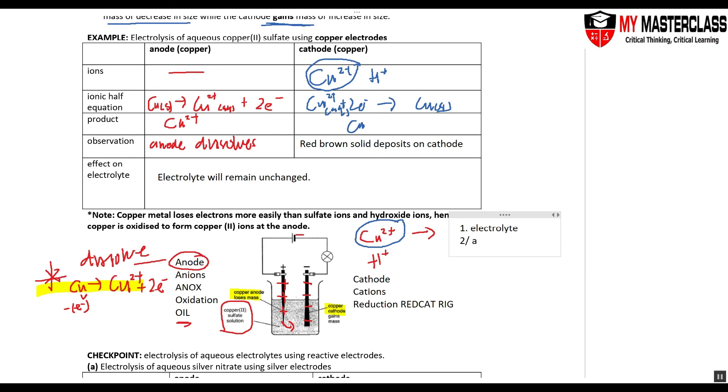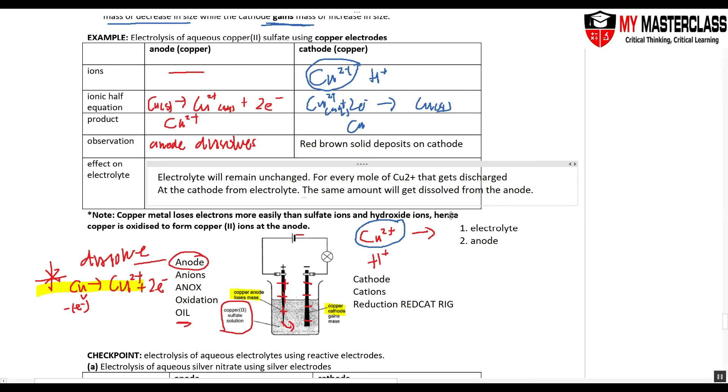It can also come from the anode where your anode dissolves. So the electrolyte remains unchanged because for every mole of Cu2+ that gets discharged at the cathode from electrolyte, the same amount will get dissolved from the anode. So the copper from the electrolyte forms copper metal, but these copper ions will get replaced from the anode.